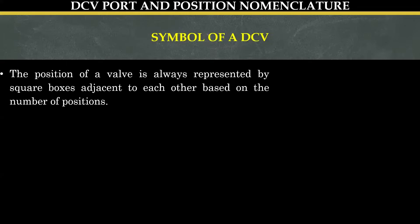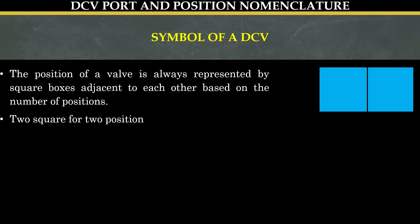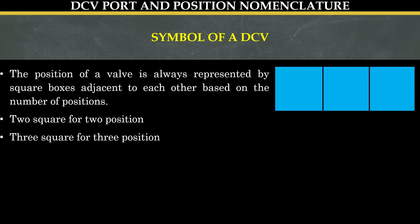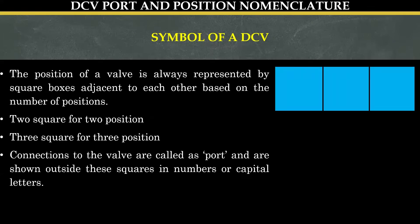The position of a valve is always represented by square boxes adjacent to each other based on the number of positions. For example, two squares are used for two positions, and for three positions, three squares are used.